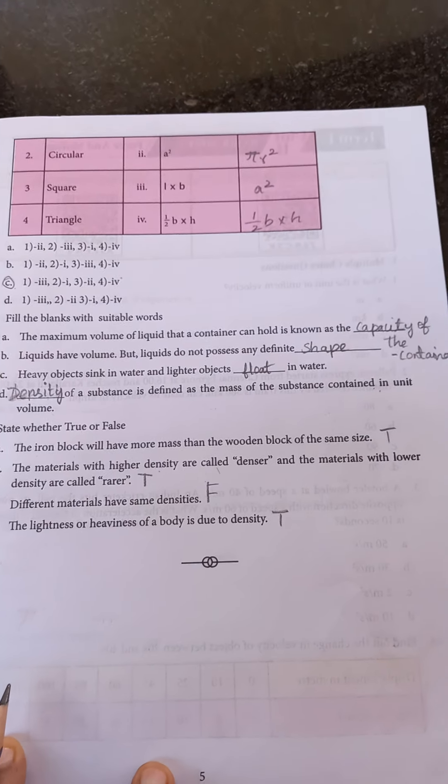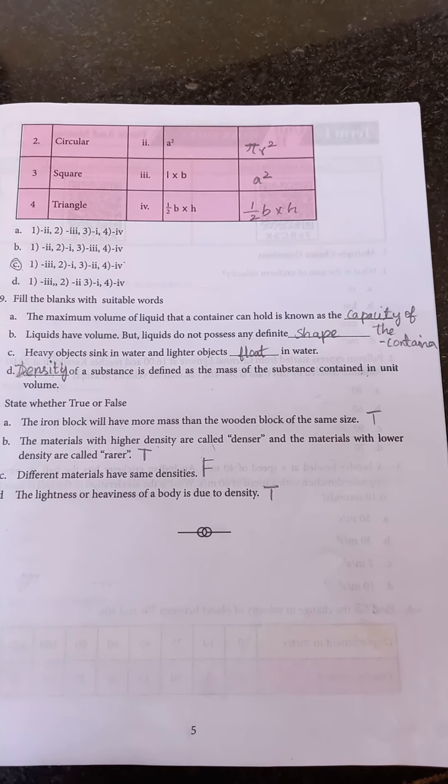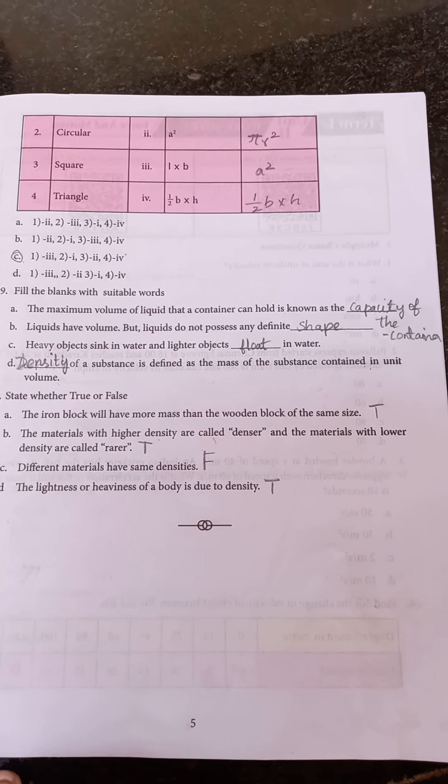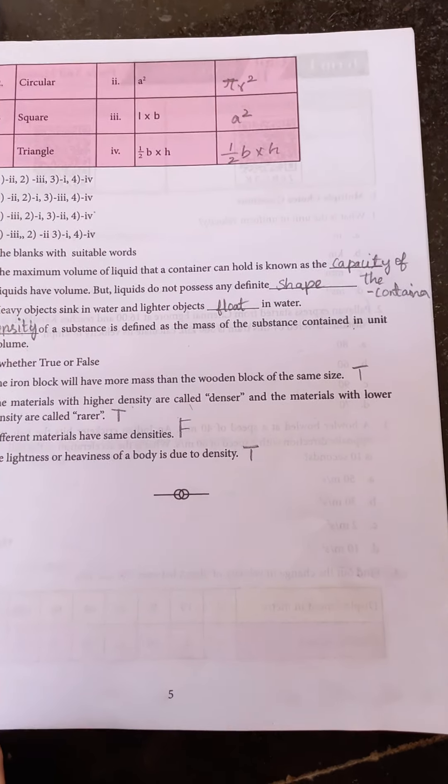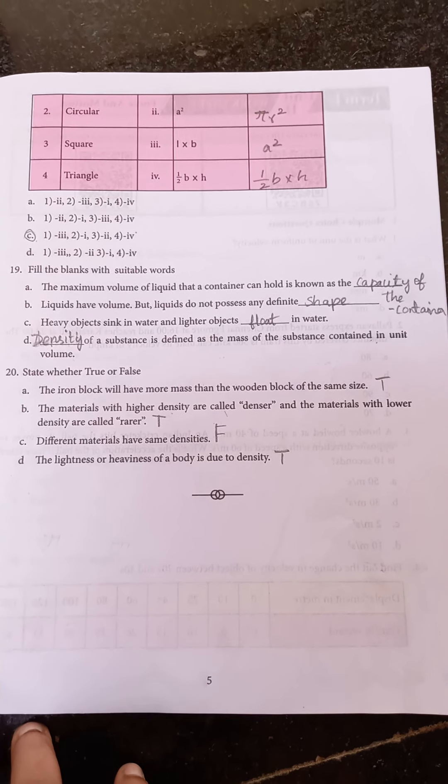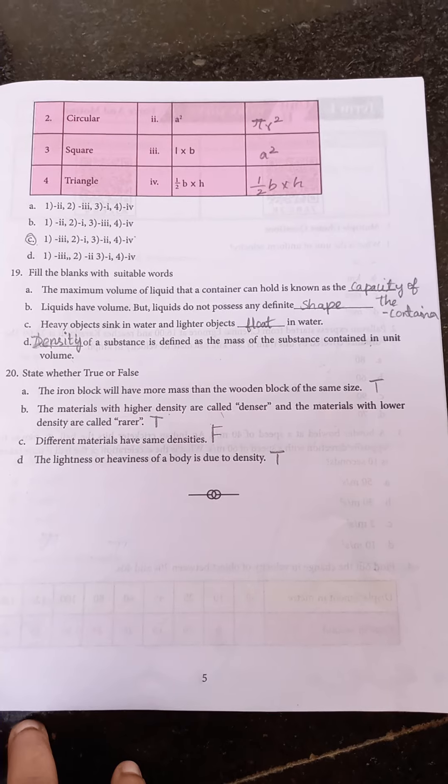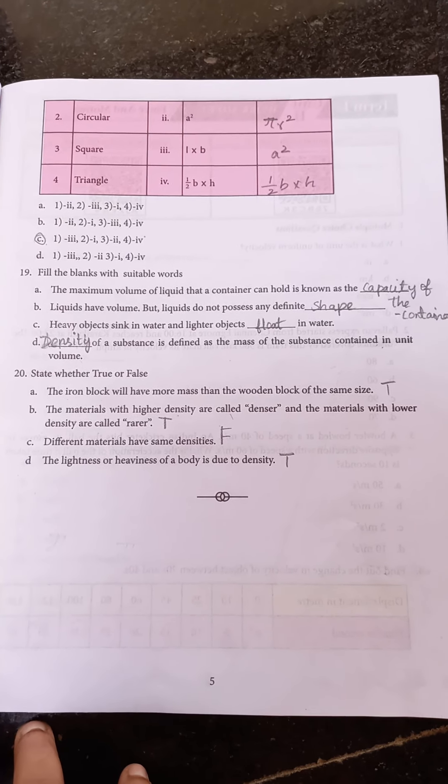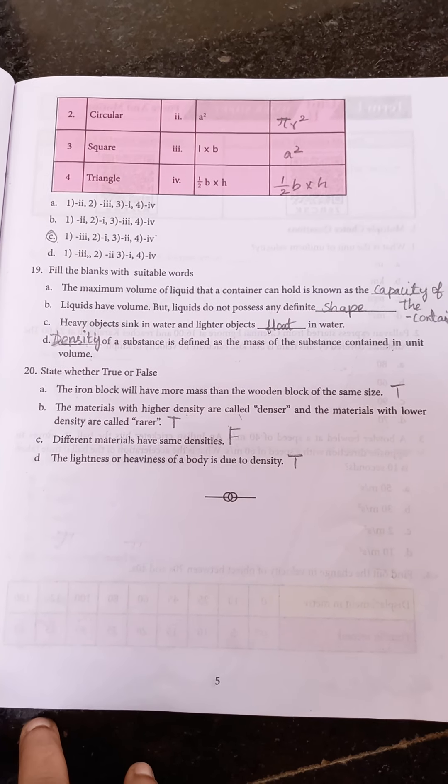19th question: fill the blanks with suitable words. The maximum volume of liquid that a container can hold is known as the capacity of the container. The second one: liquids have volume but liquids do not possess any definite shape. Heavy objects sink in water and light objects float in water. Density of a substance is defined as the mass of the substance contained in unit volume.